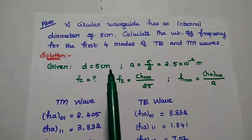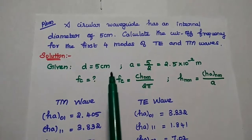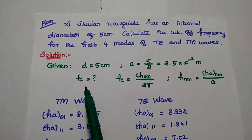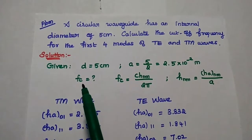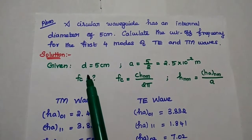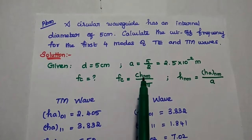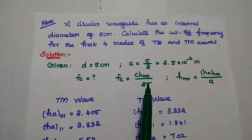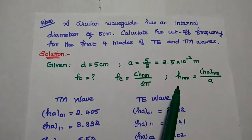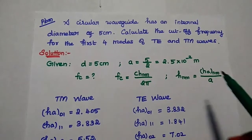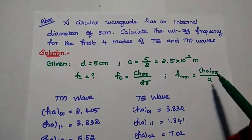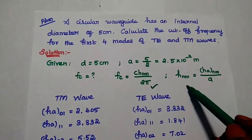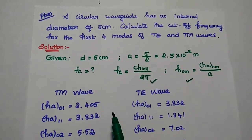The diameter is given in cm, so we have to convert it to meters. We are going to find out the cutoff frequency value. Its formula is fc = C × H_nm / 2π. Here, H_nm is equal to H'_nm(mode value) divided by A. We are going to use these two formulas in this problem.